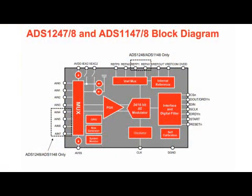The ADS1247, ADS1248, ADS1147, and ADS1148 include all of the features necessary for precision DC measurements, with IDACs, internal reference, burnout current sources, GPIOs, bias generators, system monitors, and self calibration. These devices are the ultimate analog front end for any low power design for DC sensors.